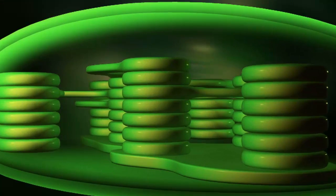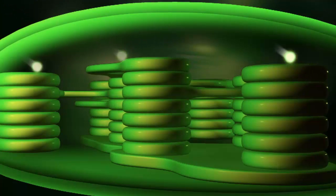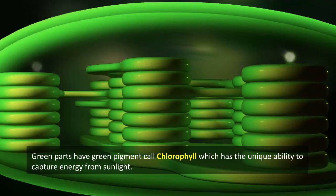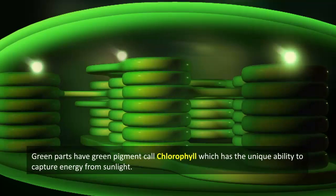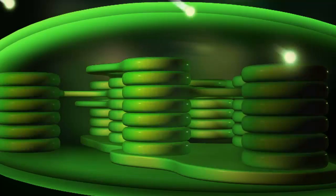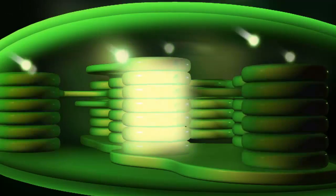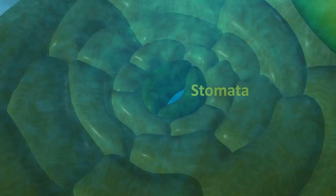Site of photosynthesis: Photosynthesis takes place in all green parts of plants, but mainly in leaves. Green parts have a pigment called chlorophyll, which has the unique ability to capture energy from sunlight.